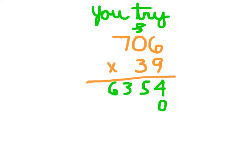Next, you would place a 0, because that 3 is worth 30. Then you go 3 times 6, which is 18. Place an 8. Regroup that 1.